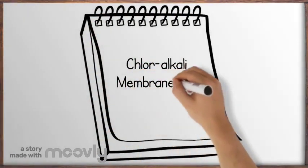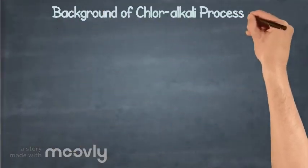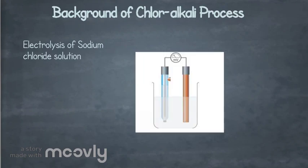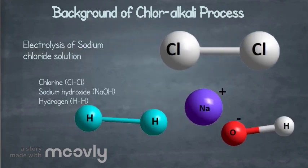Today's topic: chloralkali membrane cell process. The chloralkali process is an industrial process for the electrolysis of sodium chloride solutions to produce chlorine, sodium hydroxide, and hydrogen.